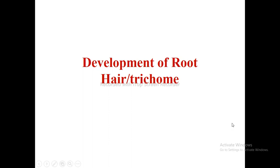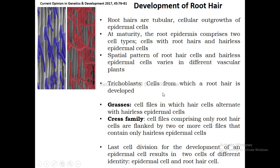In this video we are going to learn about the development of root hairs or trichomes. Root hairs are tubular cellular outgrowths of epidermal cells. Roots are covered by root epidermis, and at maturity the root epidermis comprises two cell types: cells with root hairs and cells without root hairs, called hairless epidermal cells.